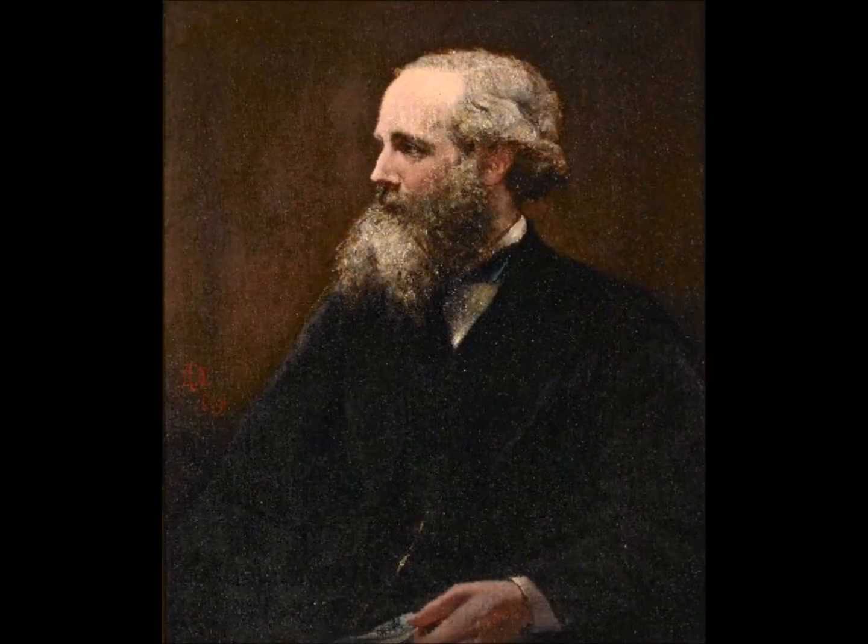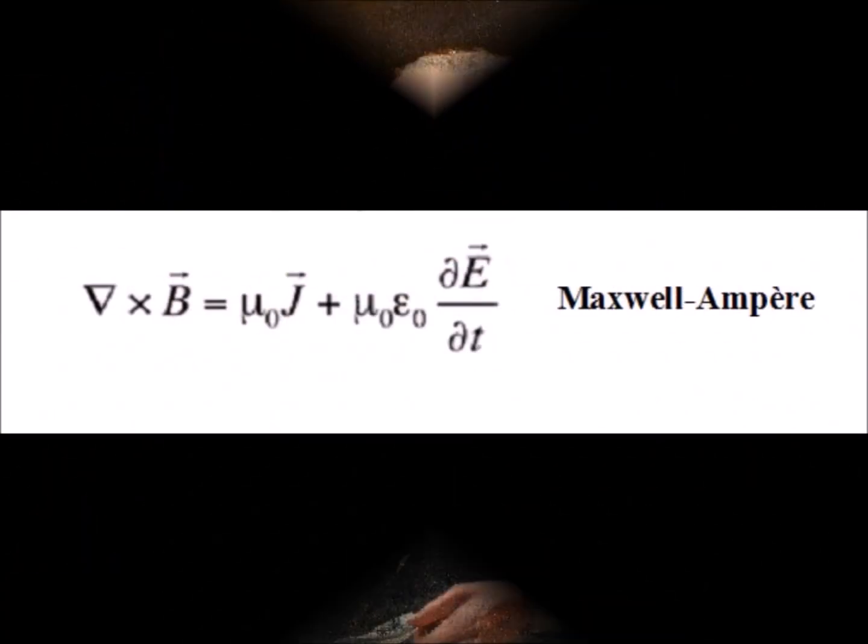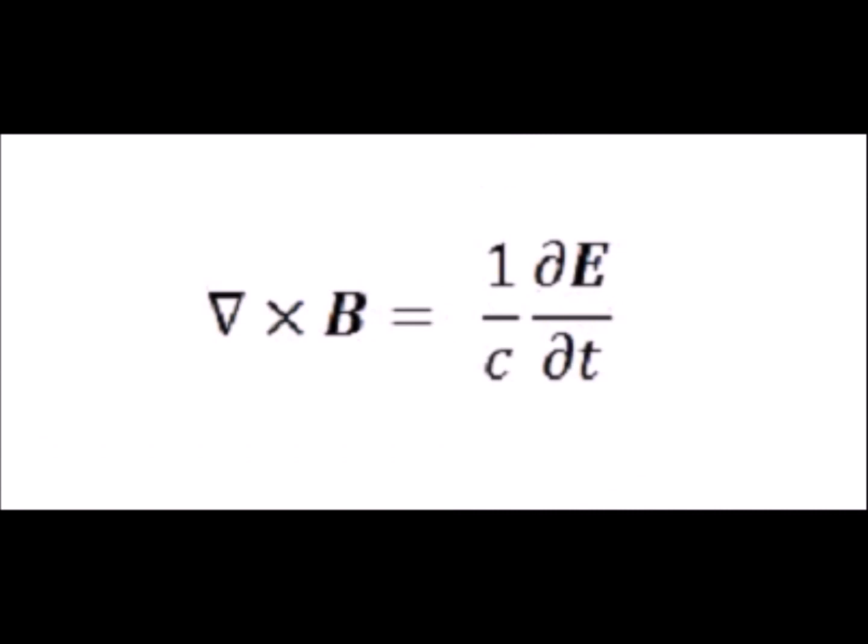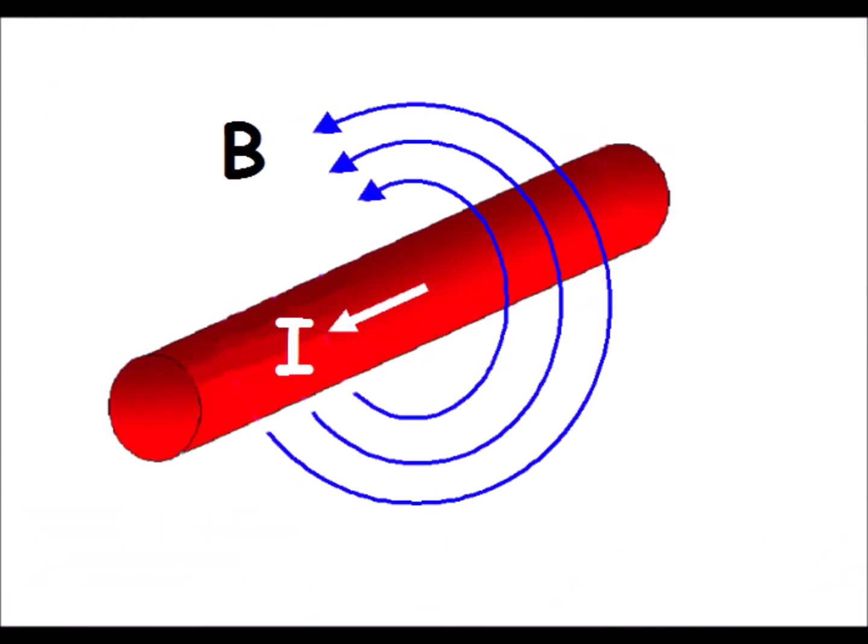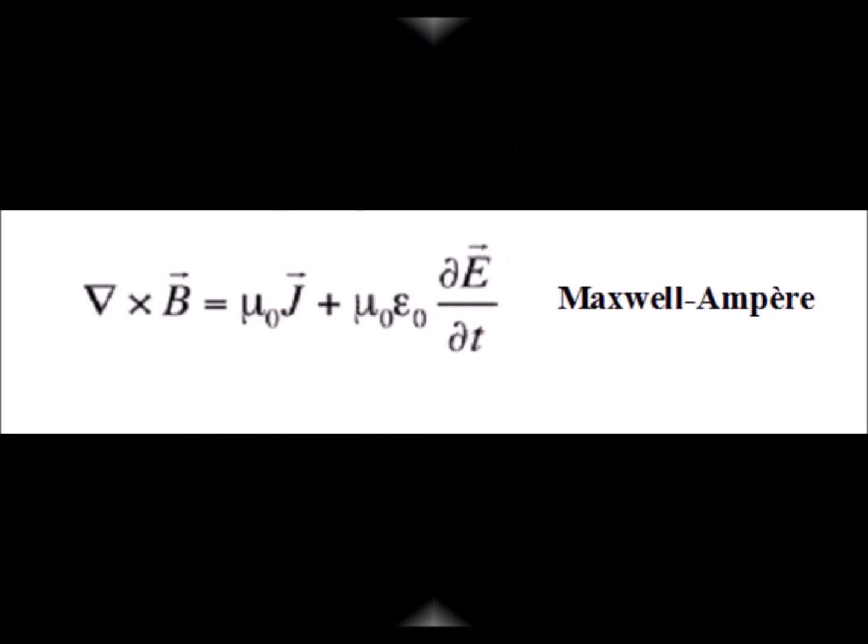Maxwell will mathematize what was then called electromagnetism. He attributed the magnetic fields to the electric current in the conductors. This is the famous Maxwell-Ampere equation.